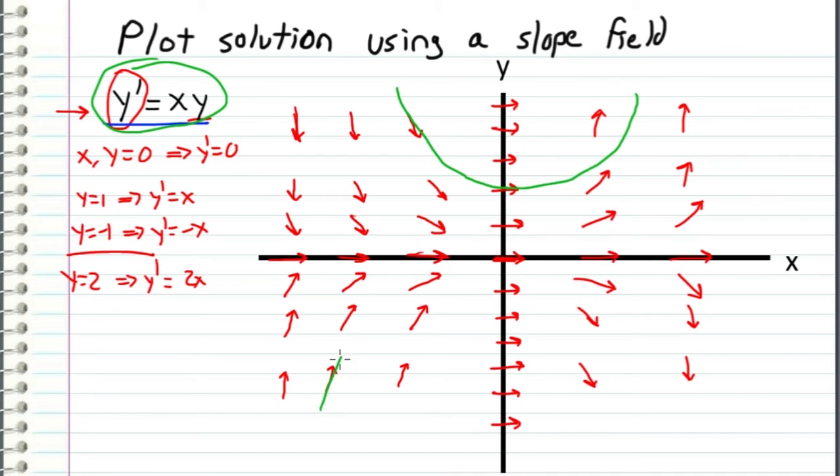I can start anywhere. A slope field just represents the general solution to the differential equation. And that is why I need to specify an initial condition such as y of 0 equals 1 in order to get a unique solution. So let's come back to the question here.